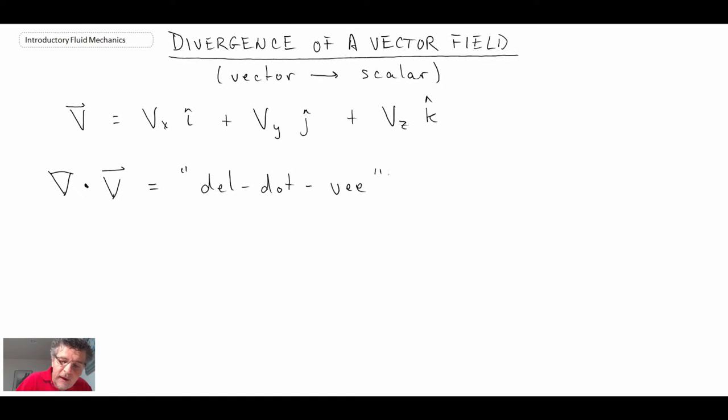So that's how you would say that, del dot v. And when we write it out mathematically, this is what it is. So that is the divergence operator.